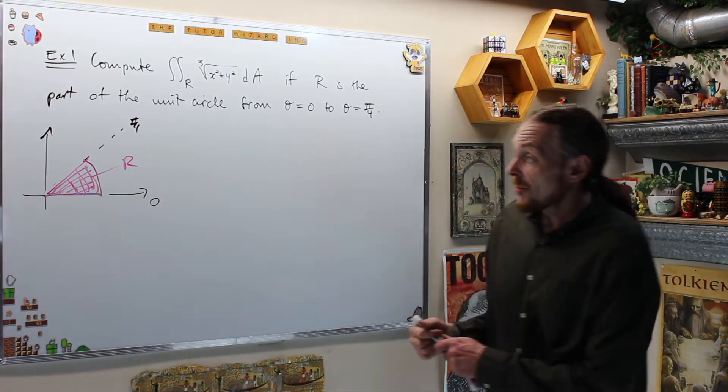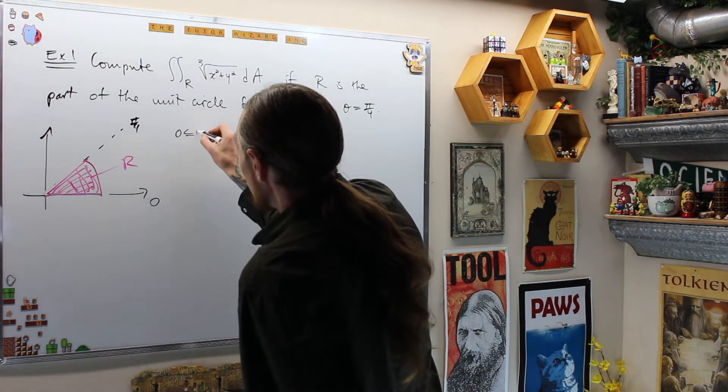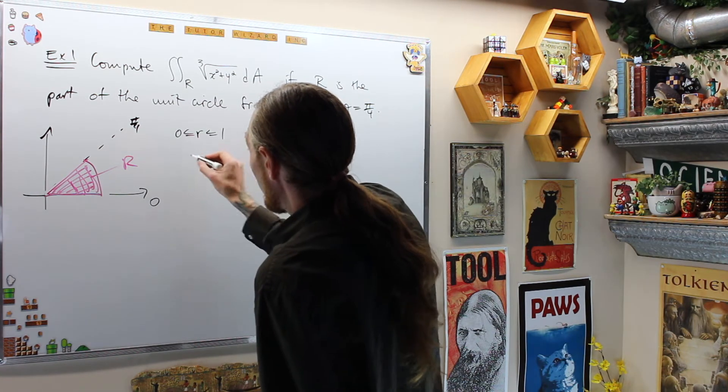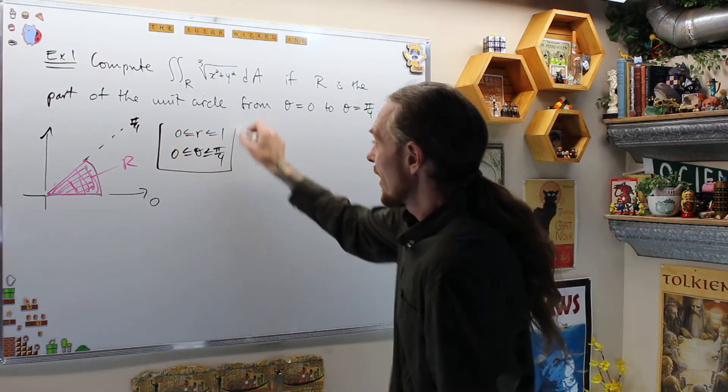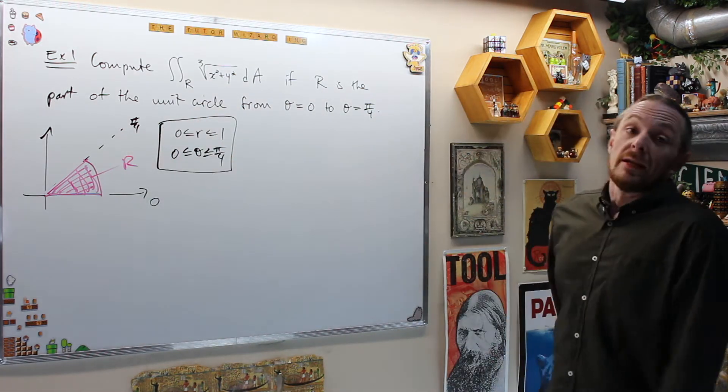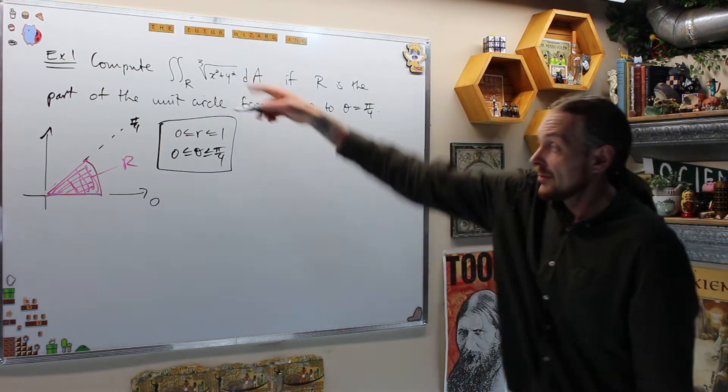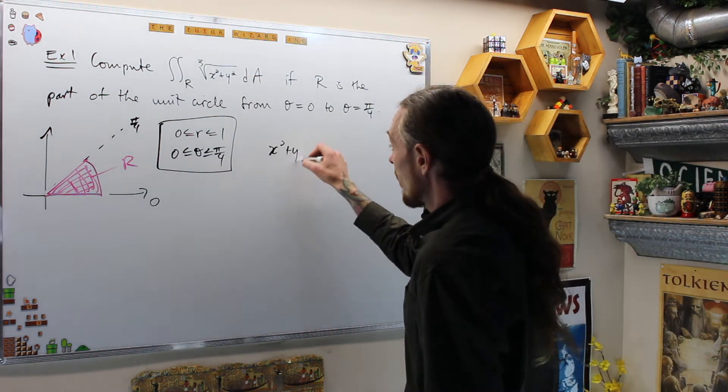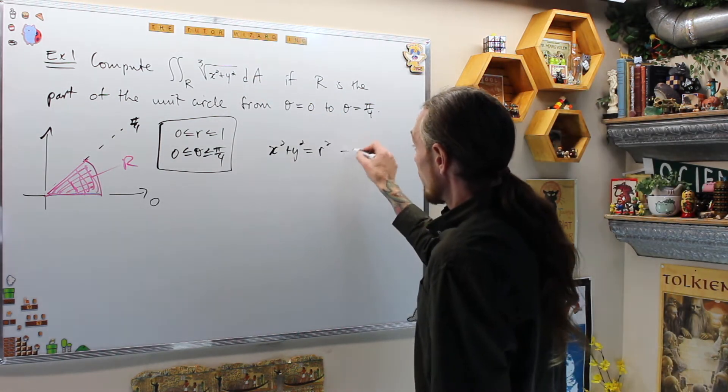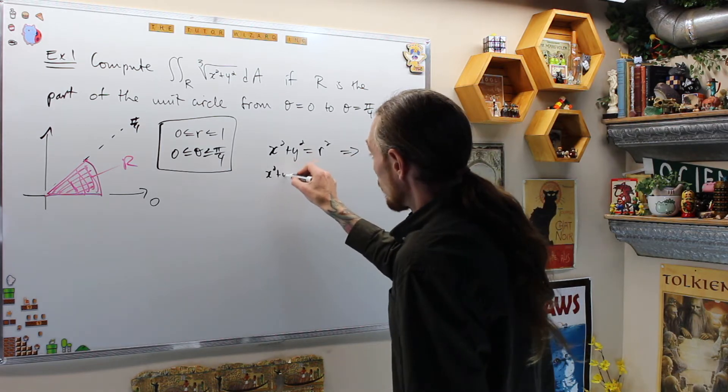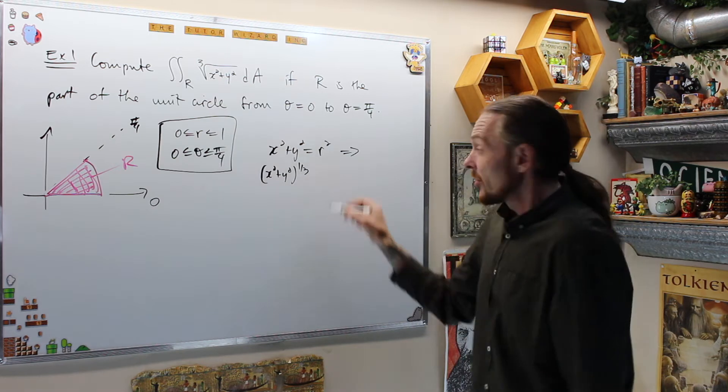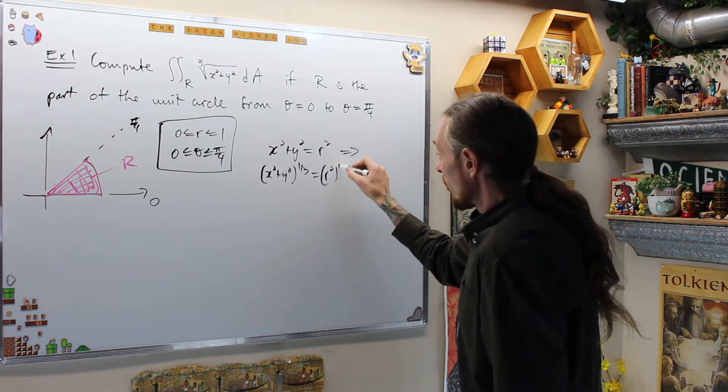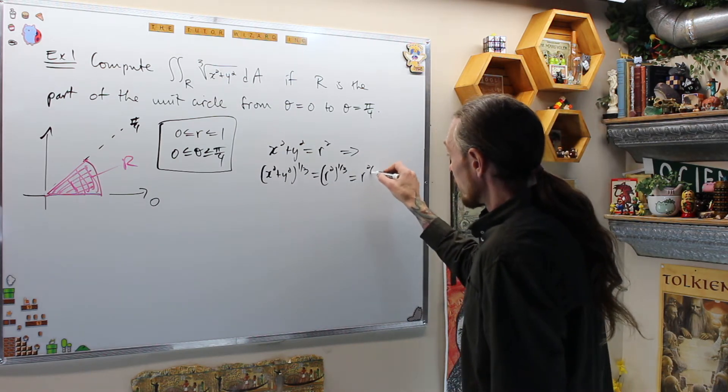What do we get from that? Our bounds. This says that 0 is less than or equal to r is less than or equal to 1. Theta is less than or equal to pi over 4. From this, now, we can view that as a polar region and turn this into x squared plus y squared equals r squared. And so x squared plus y squared to the 1 third or third root is equal to r squared to the 1 third, which is r to the 2 thirds.